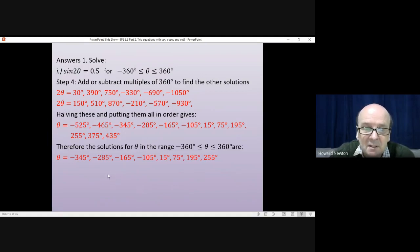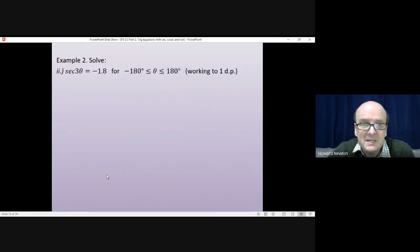Okay. What about sec, cosec and cot? Well, the method is basically the same with one extra step at the beginning. So we'll be doing this example in a moment, solving sec 3θ = -1.8. In that range, minus 180 to 180, giving the angles to one decimal place in the end. Calculators in general do not have sec on them. They only have sine, cosine and tangent.